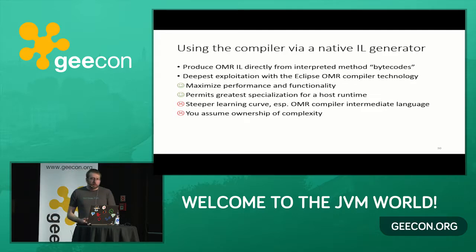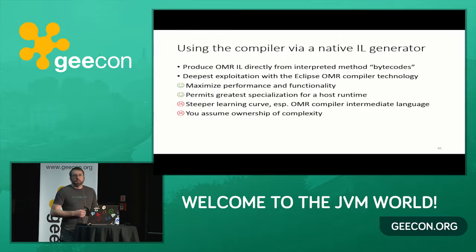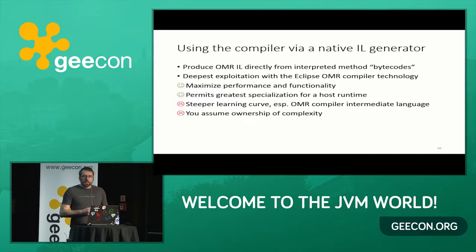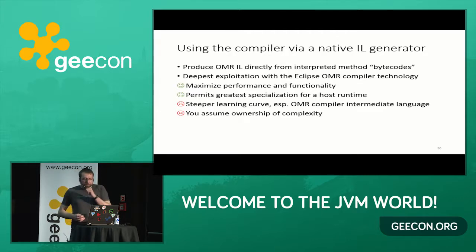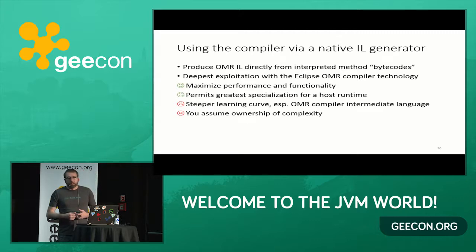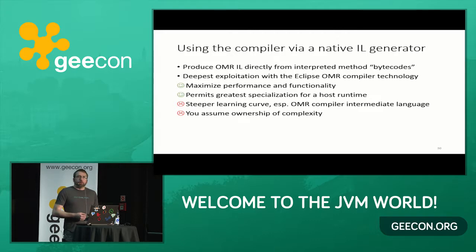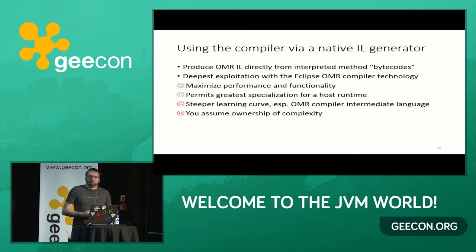You can use the compiler by creating your own native IL generator — you convert your bytecodes down into the OMR compiler intermediate language directly. This allows the deepest exploitation of the technology for maximum throughput and performance, and gives you the most ability to configure, change, or extend it. However, learning the full OMR compiler intermediate language is a very deep learning curve, so it takes the longest to get a JIT up and running this way.